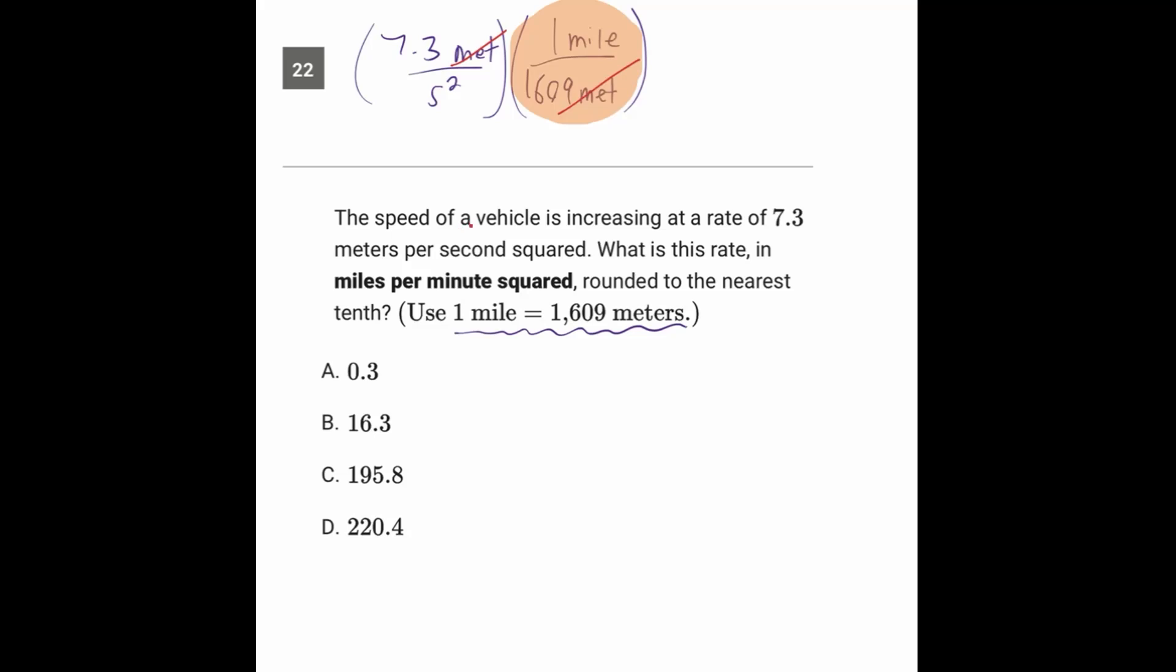Right now we're doing chemistry style unit conversions. The problem is that we've got miles per second squared, and the question is asking us for miles per minute squared. So let's do another unit conversion. One minute is 60 seconds, so if we have seconds on the bottom, we need seconds on the top. Let's put 60 seconds on the top and one minute on the bottom.